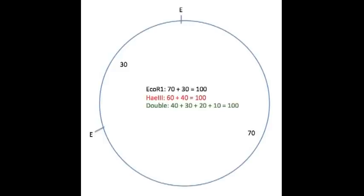As you can see, we've put the EcoRI cut sites on the circle. And we arbitrarily just started with the 70 kilobase size fragment clockwise from the first E that is placed at 12 o'clock. And the second fragment is 30 kilobases.